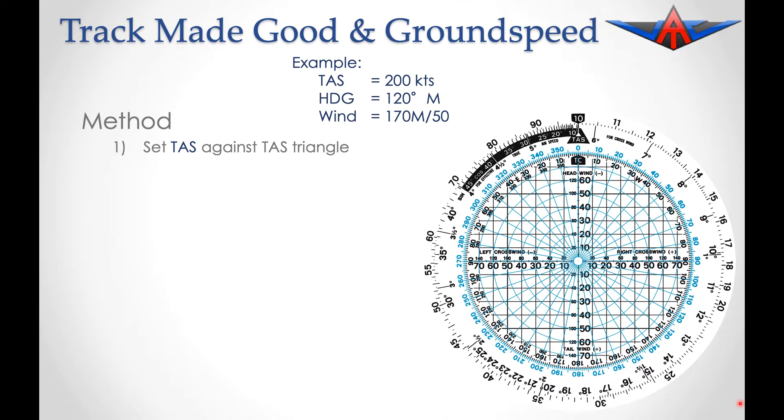Our first step is to set the TAS, or true airspeed, of the aircraft. Our TAS is 200 knots, so we need to bring that 200 knots around above the TAS triangle.